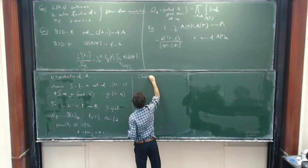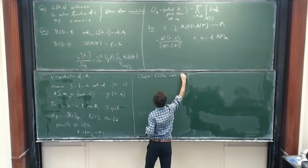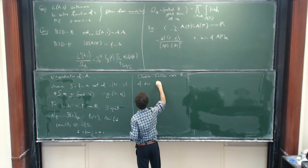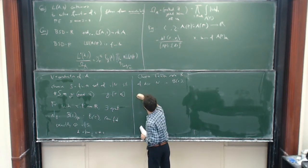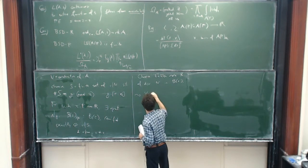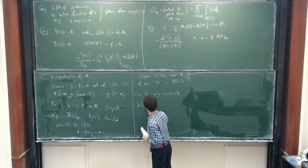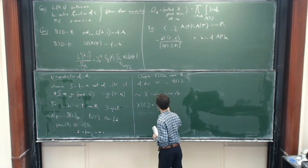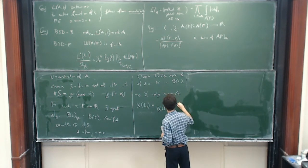Associated to this quaternion algebra, I choose an Eichler order R of discriminant N in B_tau, and then I get X, which is an algebraic curve over F whose complex points for each embedding tau are given by a quotient of the upper half-plane. Since I'm generalizing the setup of Gross and Zagier, let me state the classical situation: X is a generalization of modular curves. In the classical case F would be Q, the set S would be empty, and X would be X_0(N).